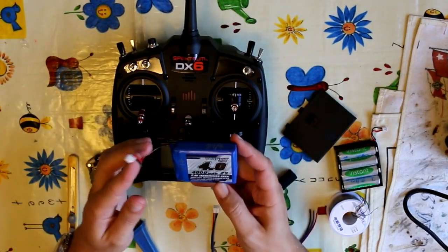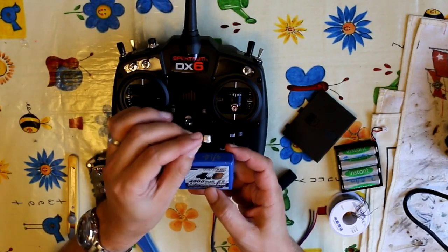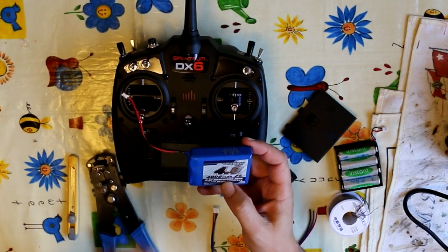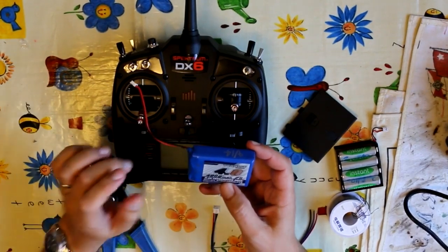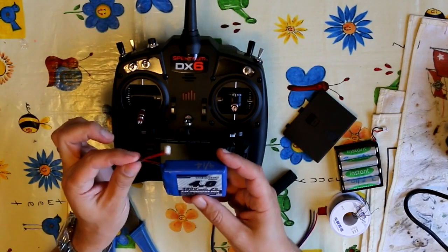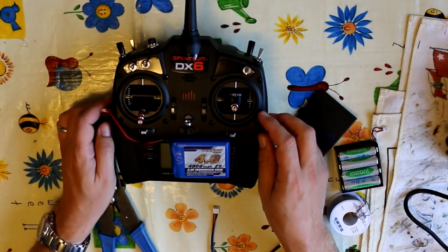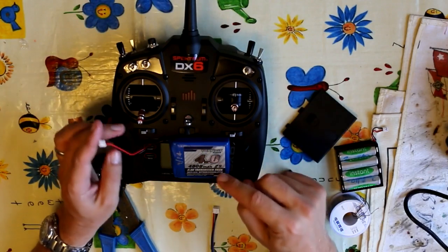You can also get the Spectrum charge lead for this connector which has two banana plugs on, which I will put the part number in the description. So you can just buy that and charge this on a normal NIM charger. But what I'm going to do, because I use Selpo chargers that charge through the balance connector, I need a balance tap on this.